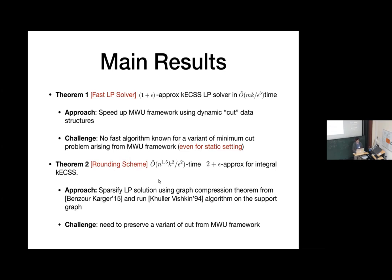The second step is a rounding scheme to get an integral solution. Given an LP solution, we can get an integral solution, but we default with a running time of n to the 1.5. The approach is similar to previous work by Chandra and Kent: we try to sparsify the LP solution using a graph compression theorem by Benczúr and Karger, then run the combinatorial algorithm by Khuller-Vishkin on the support graph. The challenge for sparsification is that we need to preserve not just cuts, but also some variant of cuts from the framework.